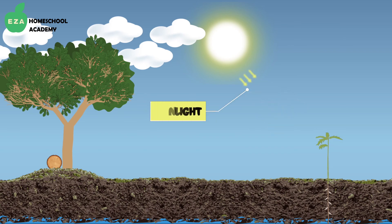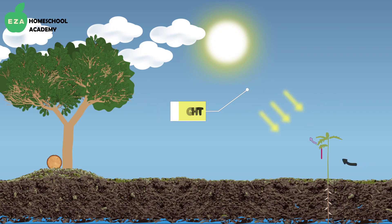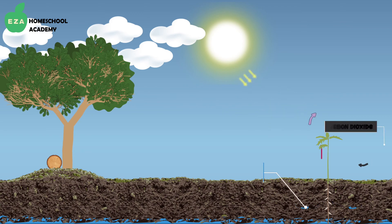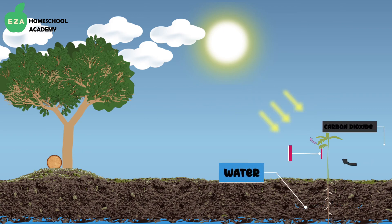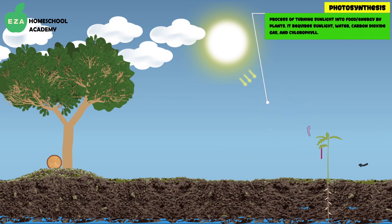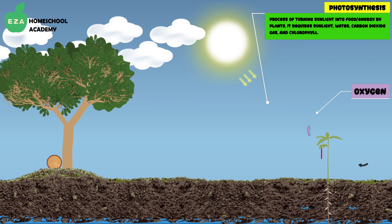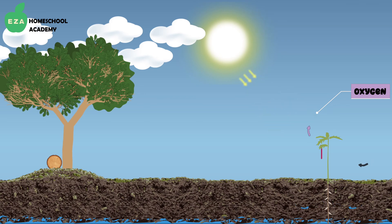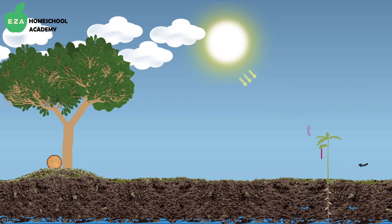With the help of the chlorophyll, the leaves of the tree take in sunlight. The energy from the sun is combined with carbon dioxide and water and nutrients from the soil to make sugar so that the tree can grow and reproduce. This process is called photosynthesis. During the process of photosynthesis, oxygen is produced, which the tree expels, and humans and other living things depend on this oxygen. When we breathe out, we provide the trees with carbon dioxide.